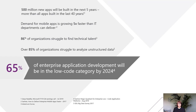Things are changing dramatically for application development, BI and automation. In the next five years, there'll be more applications built than in the last 40 years — a total of 500 million apps that will be rebuilt. The demand for mobile apps is one of the reasons for this; we see demand grow five times faster than IT can deliver. 86% of organizations struggle to find technical talent to tackle this huge backlog. That's why it's more important than ever to empower new talent to become developers — and that's where low-code comes in. Gartner predicts that by 2024, 65% of app development will be done with low-code.